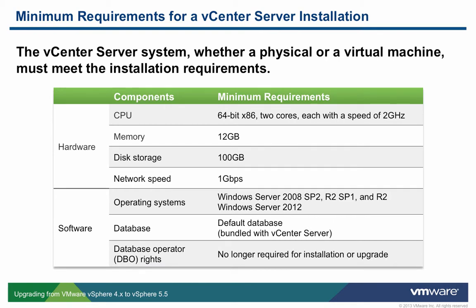One of the steps we outlined in the previous slide is to verify that your infrastructure meets VMware's minimum hardware and software requirements. Part of your infrastructure is your vCenter server. This slide outlines the hardware and software requirements specifically for vCenter. There are two versions of vCenter server. The traditional version runs on top of Windows. The newer version is implemented as a virtual appliance which runs on top of Linux. The requirements outlined on this slide are for the traditional Windows-based vCenter server.